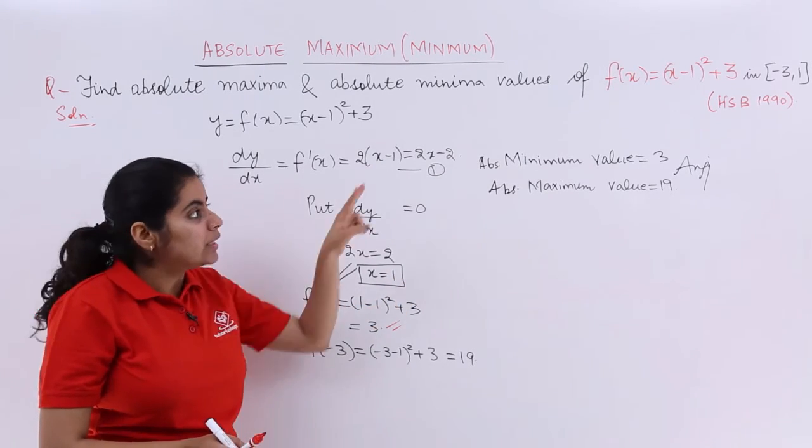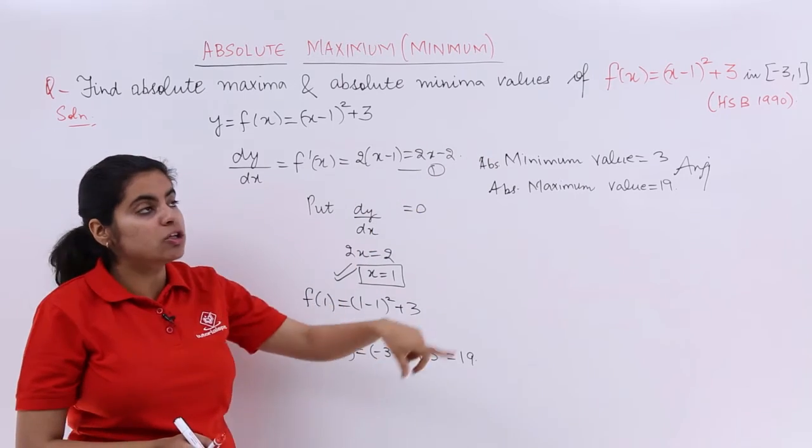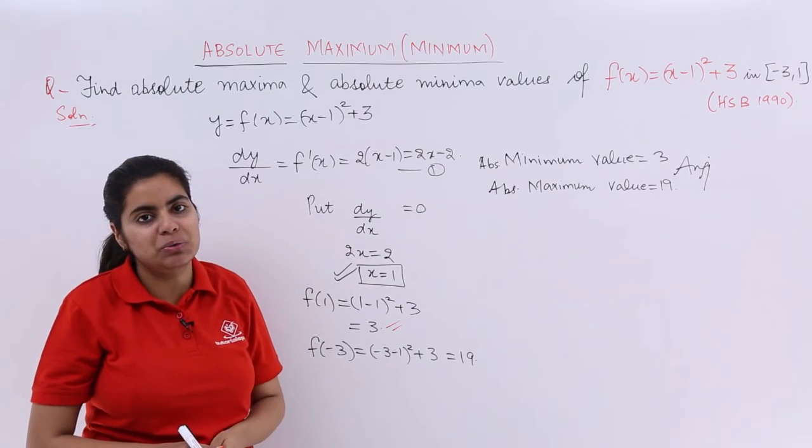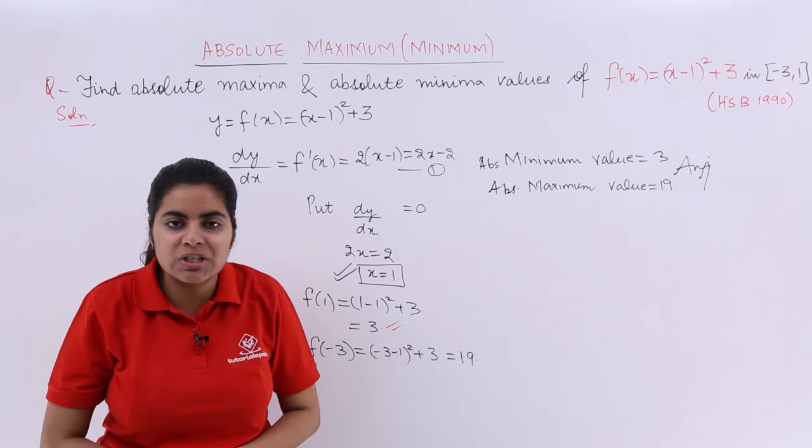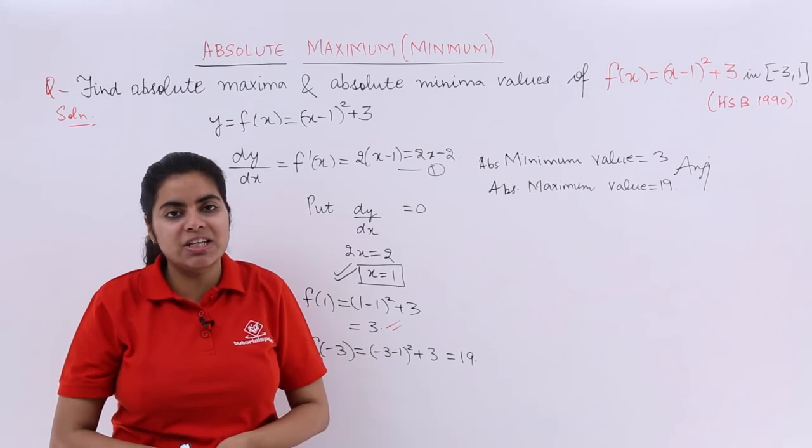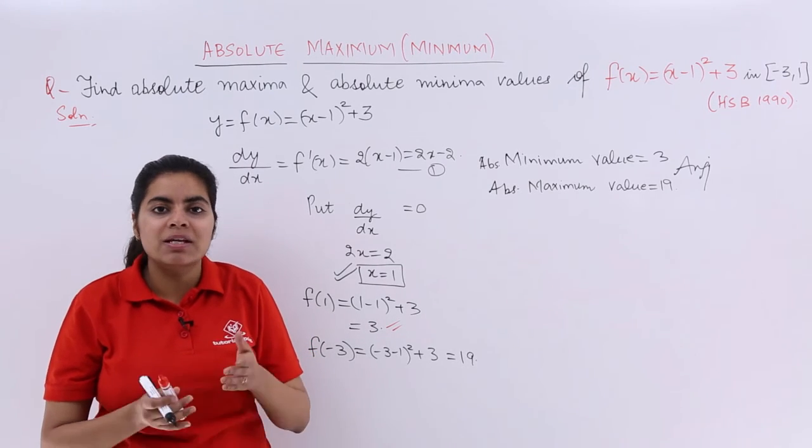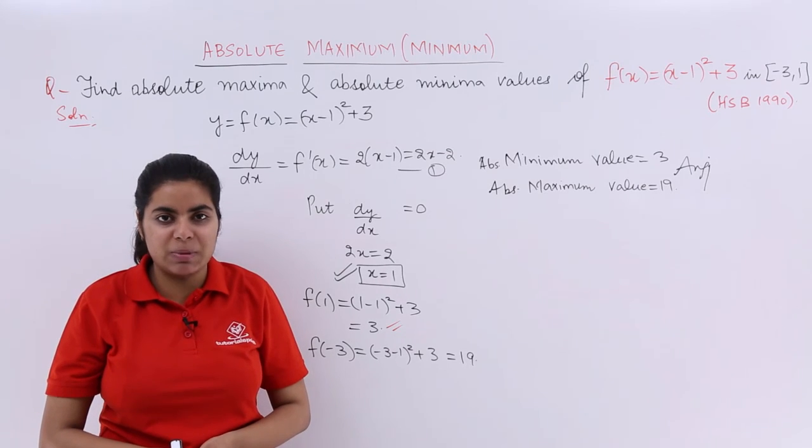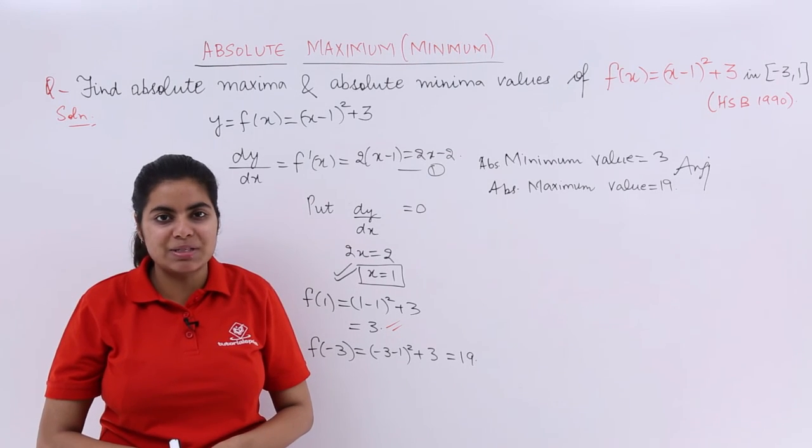So f of 5 you need to check. Then you have to check for f of -3 also. Then you have to check for f of 1 also. But in this question, by chance the boundary point and the stationary point became same. So our task became simpler. So this is how you do the questions based on absolute maxima and absolute minima.